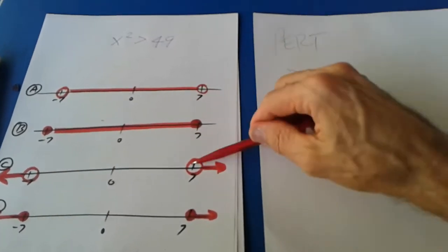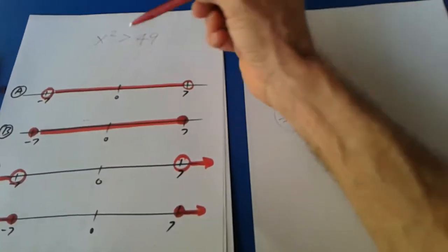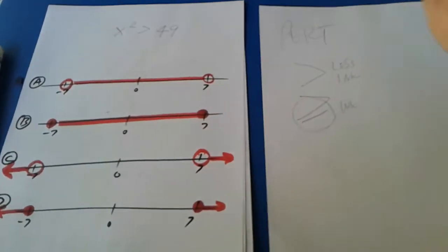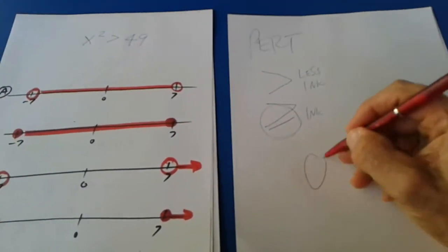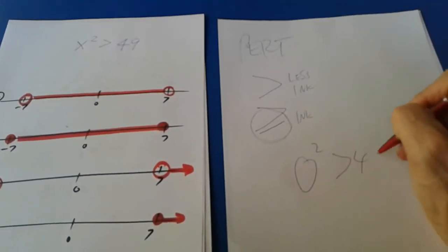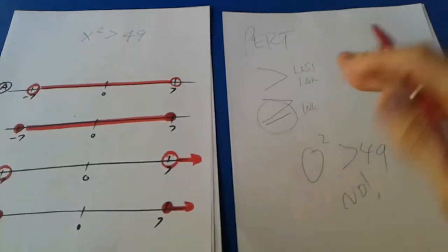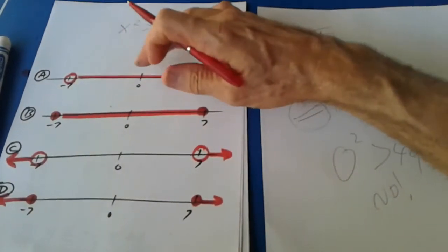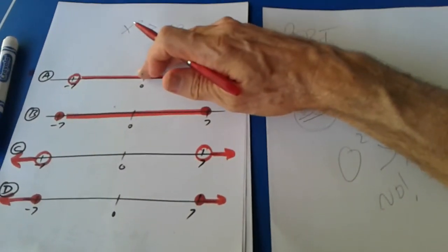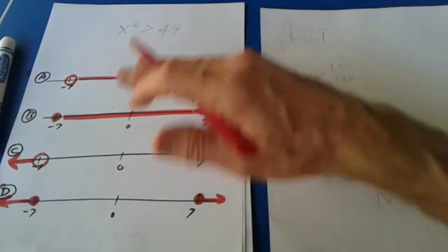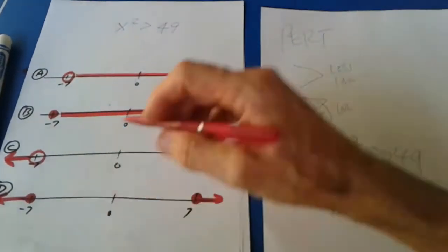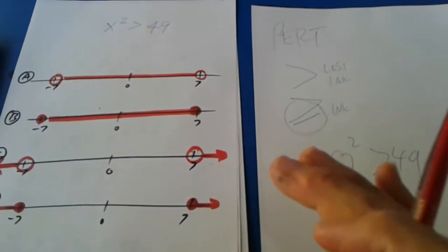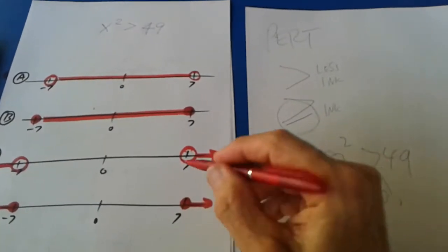Now we just have to select between these two. Let's plug in zero as an answer. Zero squared is bigger than 49? No, that's not possible. So we can't use this one — can't use that one. So there's our answer. That's how you test it.